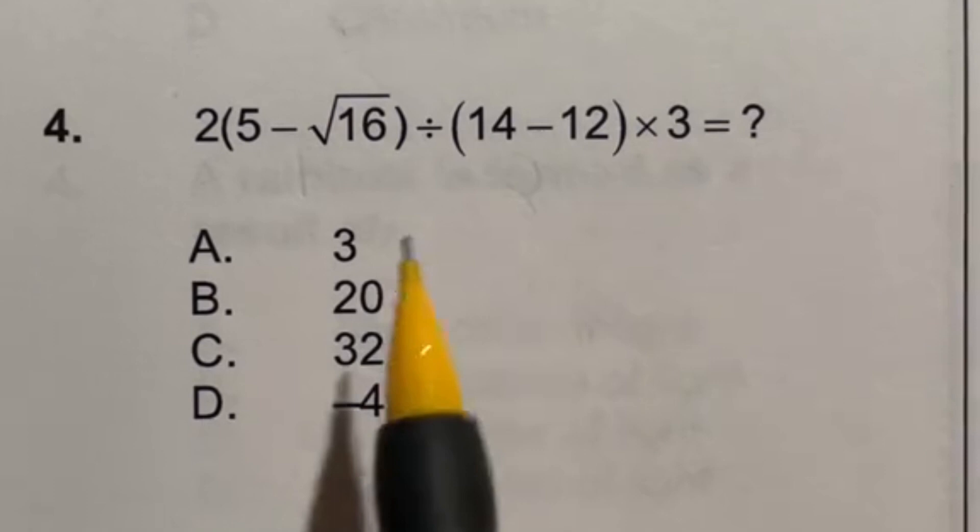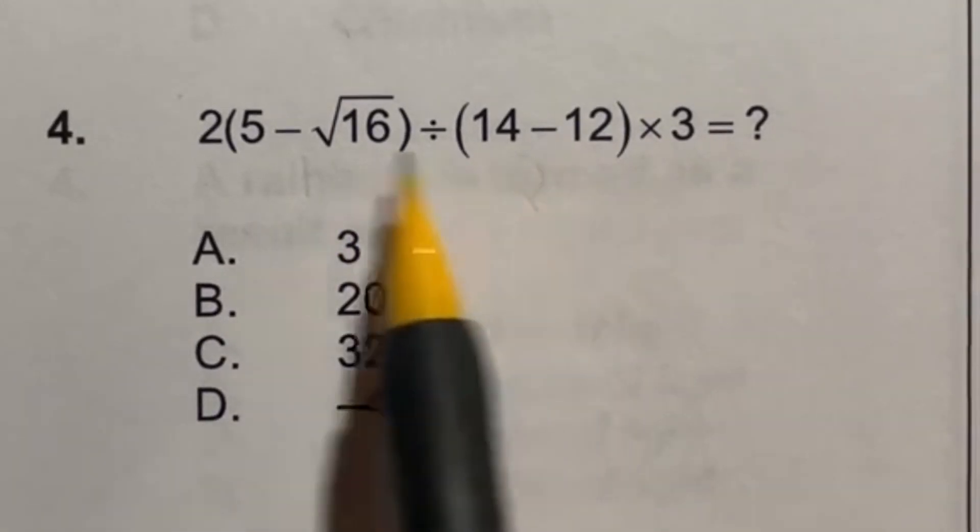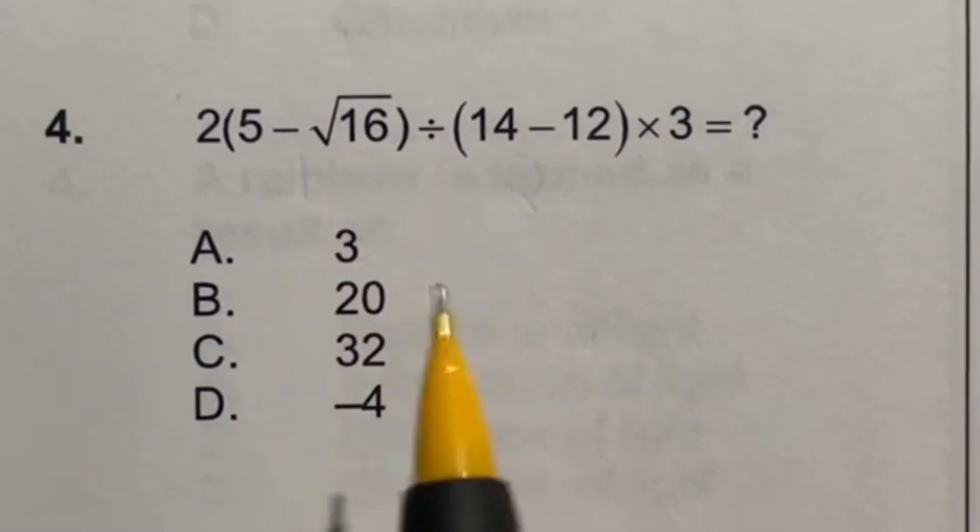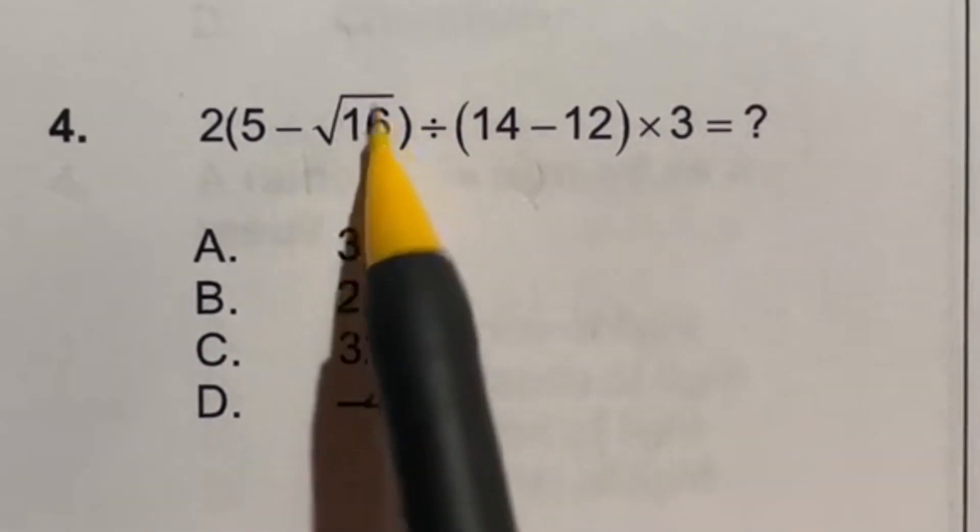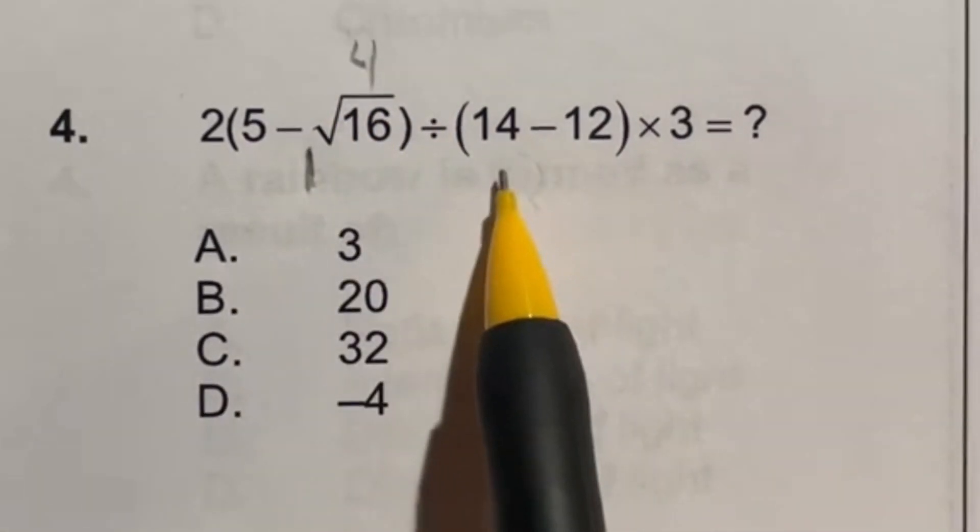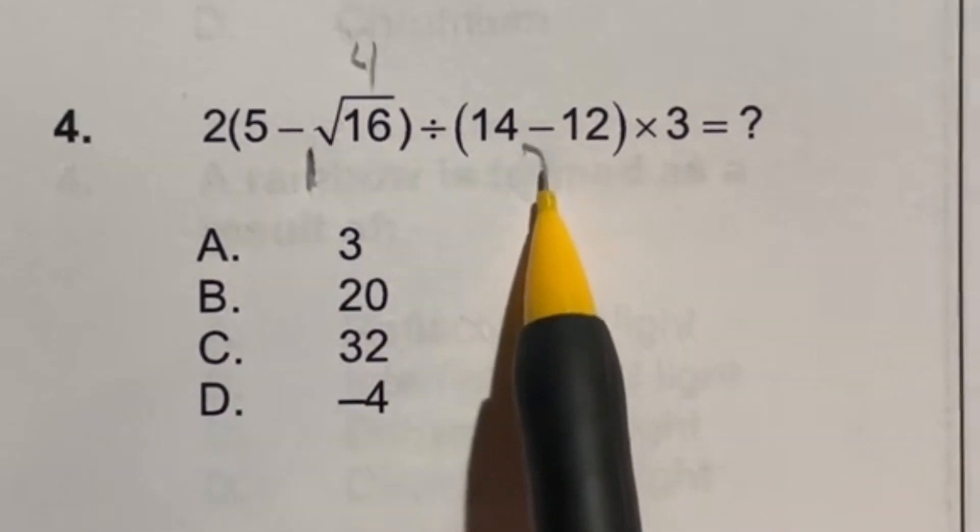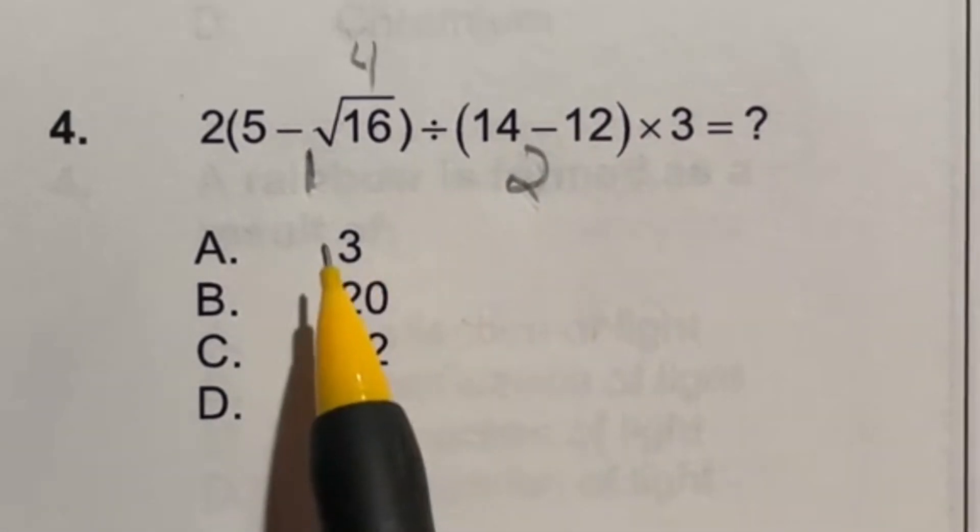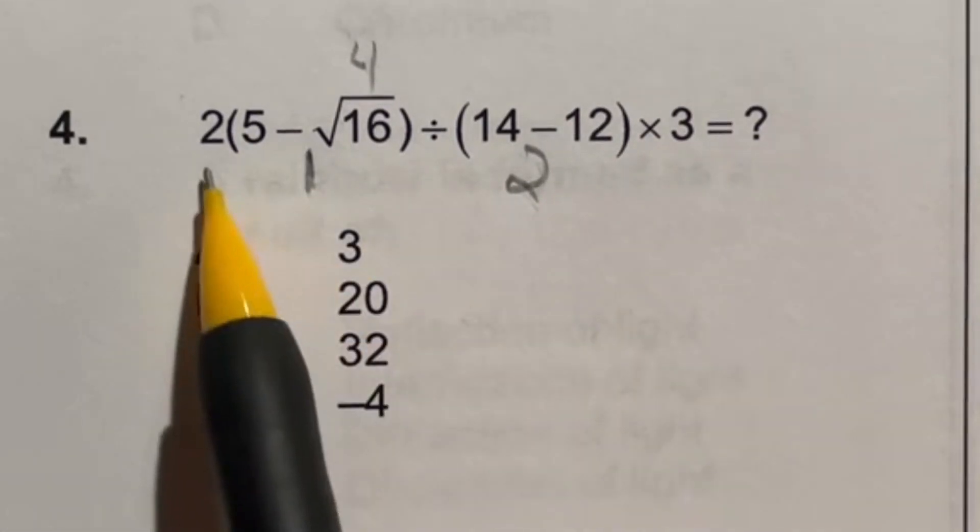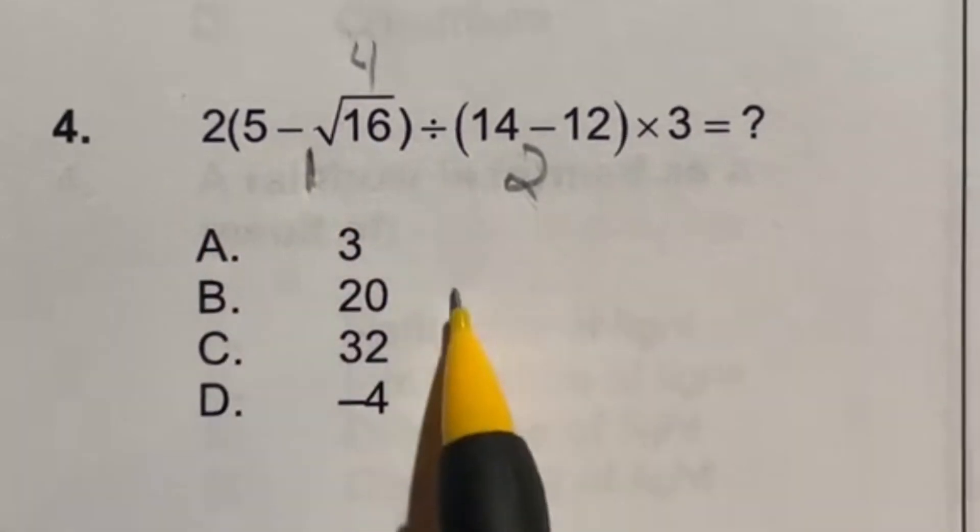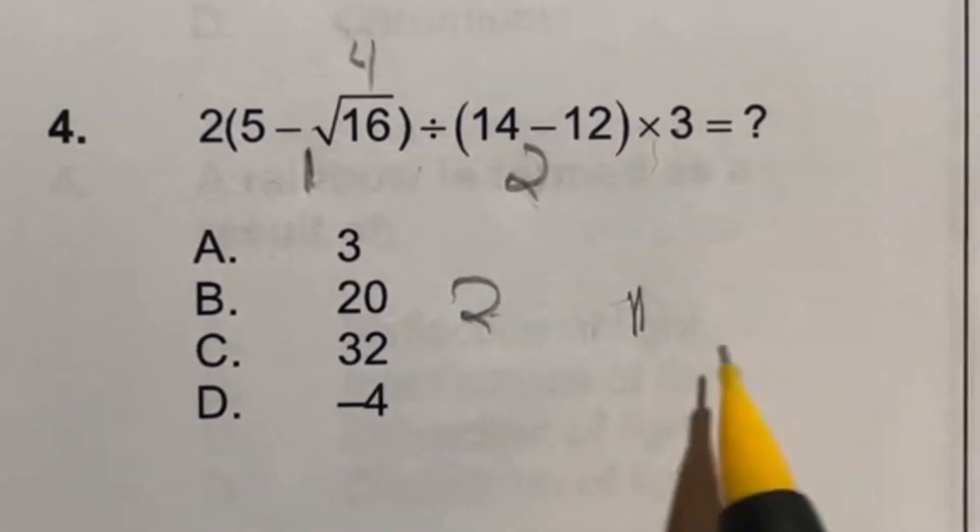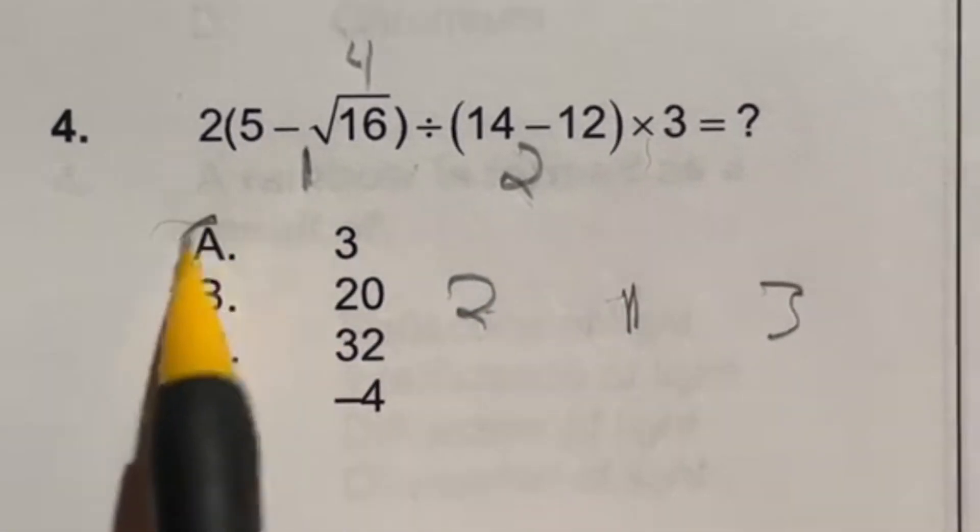Number 4, we got a lot of PEMDAS rule following going on here. So first thing you need to do is in parentheses. But notice the square root is inside the parentheses, which is like a parentheses inside a parentheses. So that's going to be the first thing we look at. Square root of 16 is just 4. And 5 minus that 4 is going to give me 1. Then we have over here, parentheses, 14 minus 12 is going to give me 2. And now multiplication division is done in the same step. So we're going to multiply from left to right using the numbers on the bottom here now. So 2 times 1 is going to give me 2. Divided by 2 is going to put us back at 1. And then times 3 is going to give us a final answer of 3, which is going to be answer A.